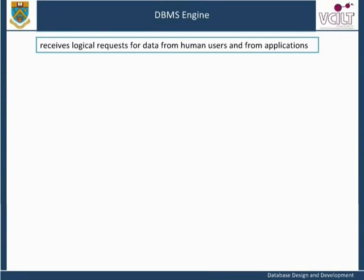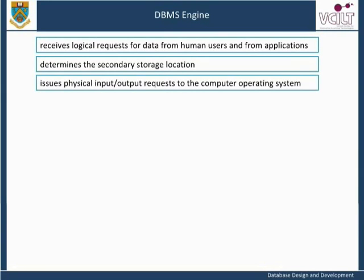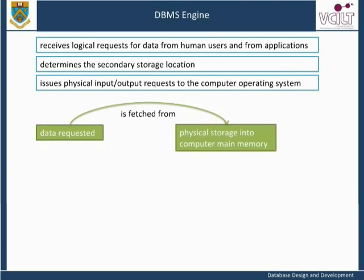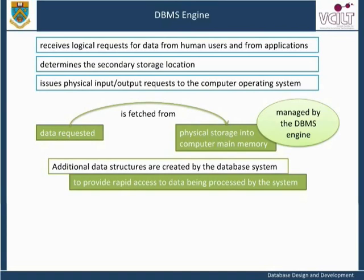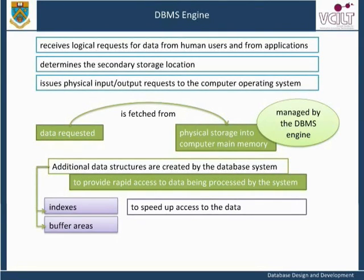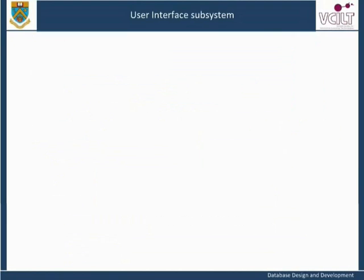The DBMS engine receives logical requests for data and metadata from human users and from applications, determines the secondary storage location — that is, the disk address of the requested data — and issues physical input or output requests to the computer operating system. The data requested is fetched from physical storage into computer main memory and held in special data structures provided by the DBMS. Additional data structures are created by the database system itself or by users in order to provide rapid access to data being processed. These include indexes to speed up access to the data, buffer areas into which particular types of data are retrieved, and lists of free space. The management of these additional data structures is also carried out by the DBMS engine.